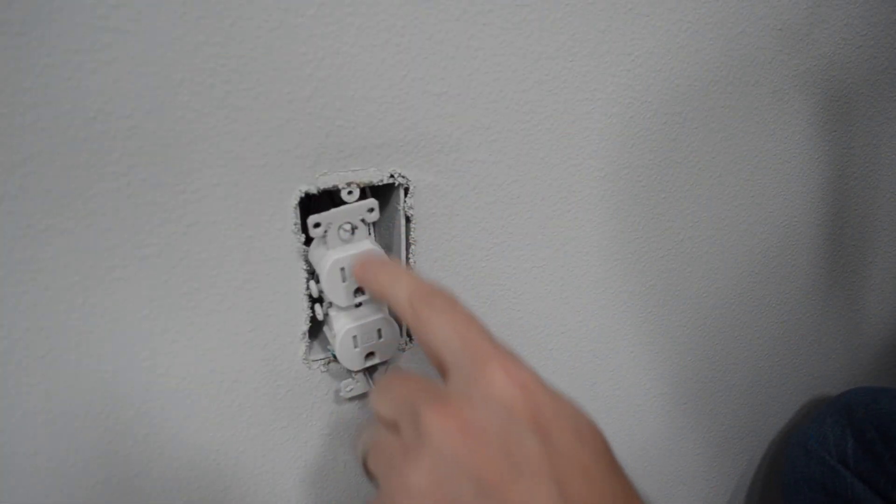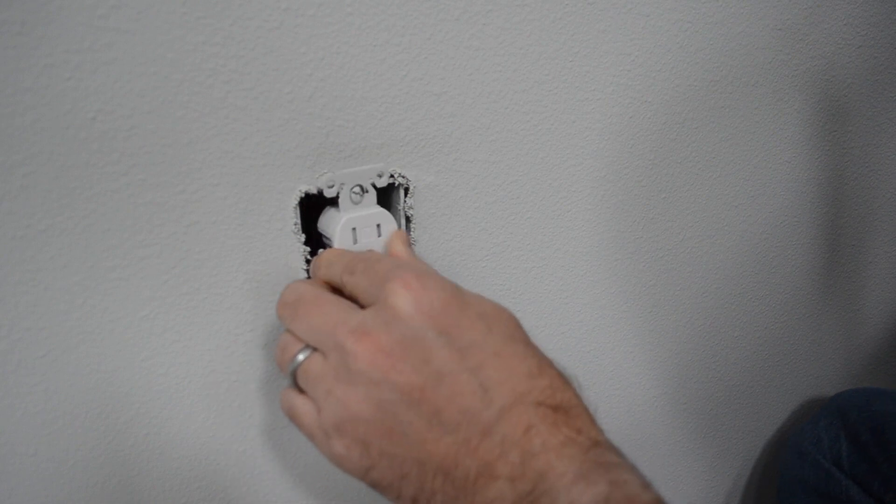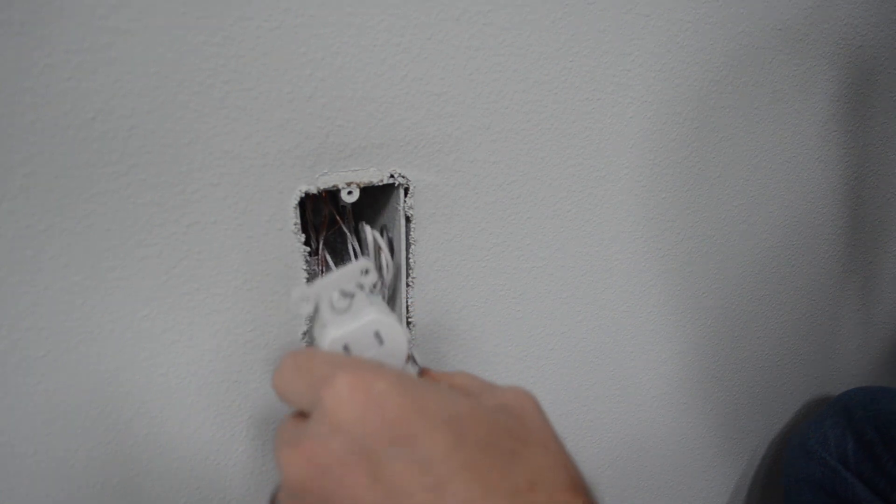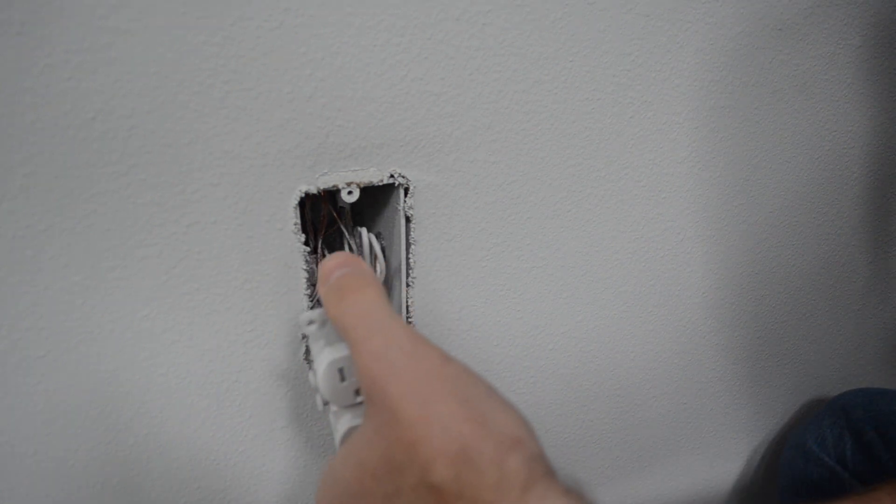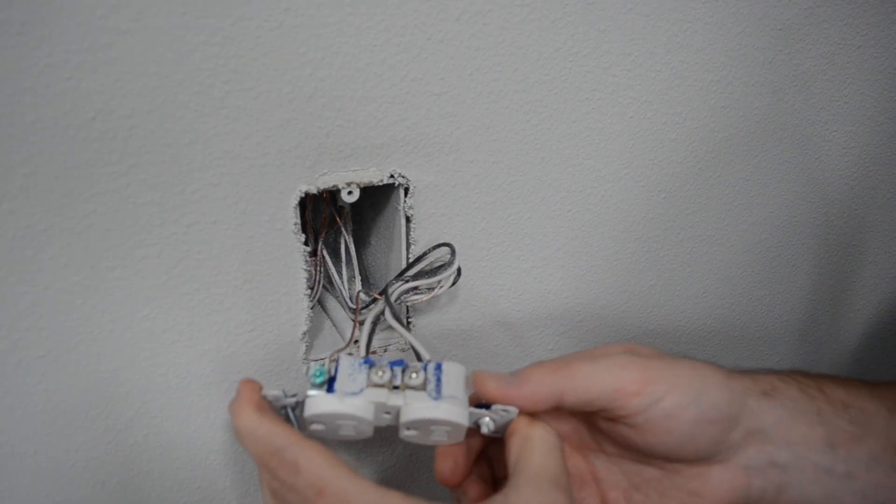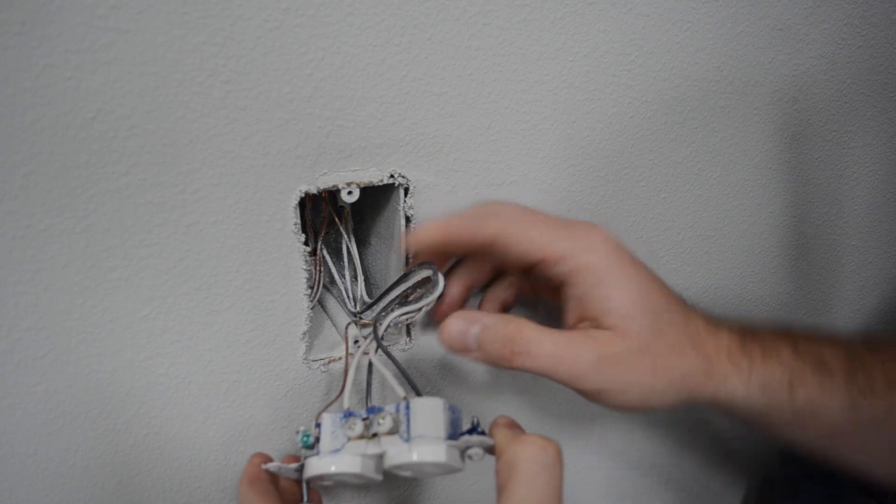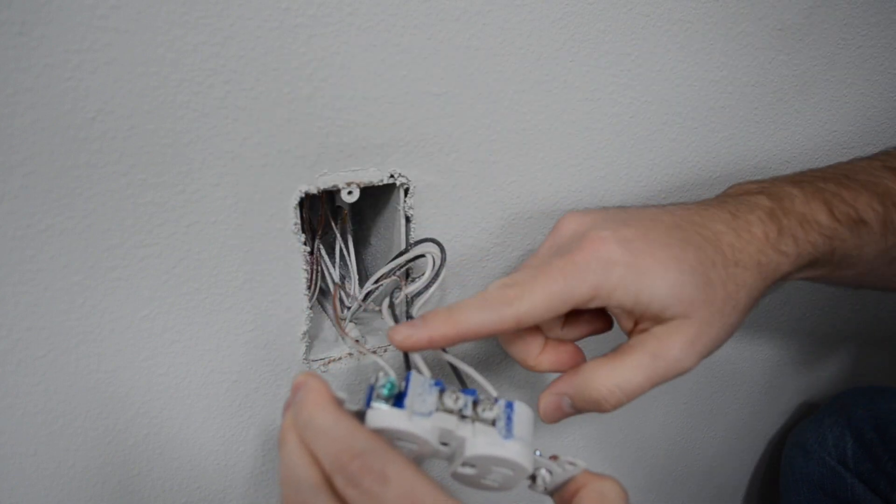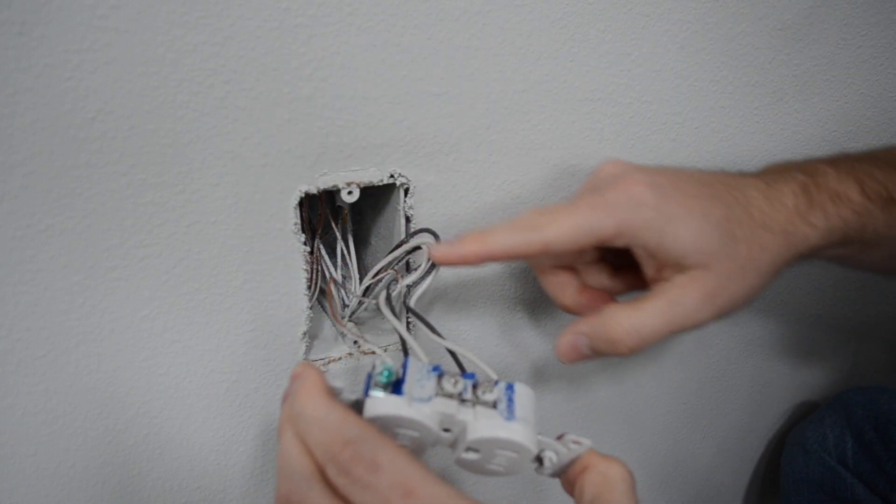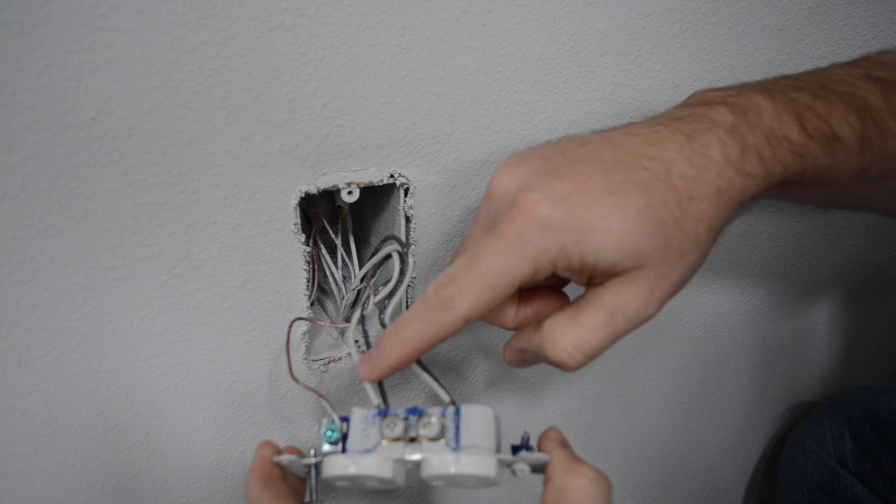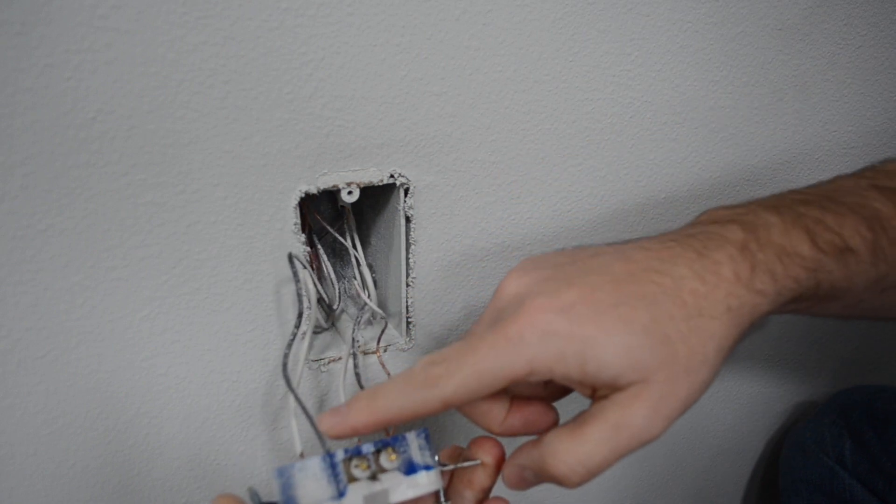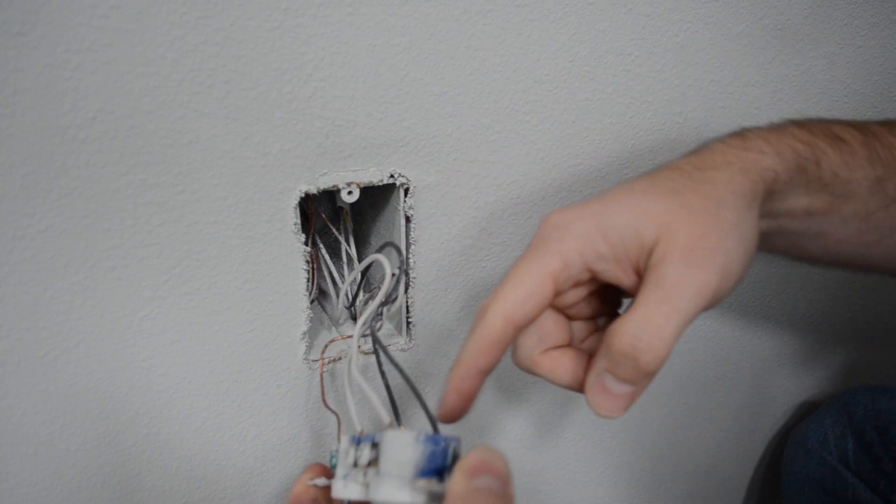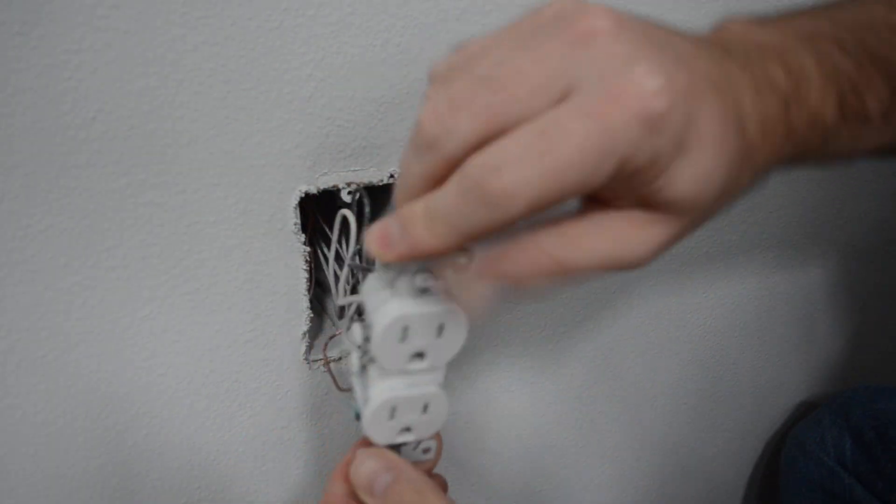Now that we have the two screws that hold the outlet into the wall box removed, we are going to pull this out and take a look at the wires that are attached to it. On this particular one we have one grounding cable which is all copper, and then we have two white and two black. One white and one black per outlet.